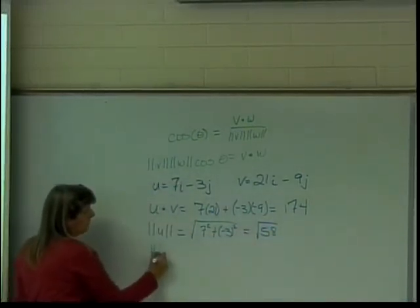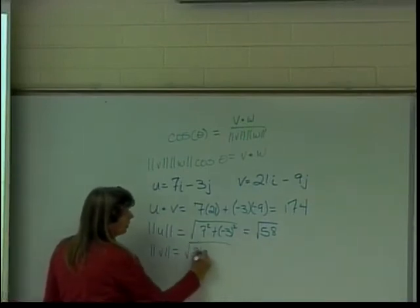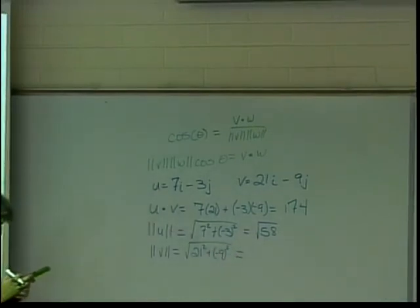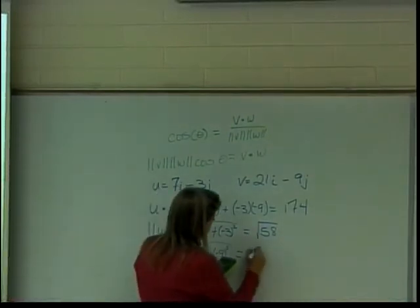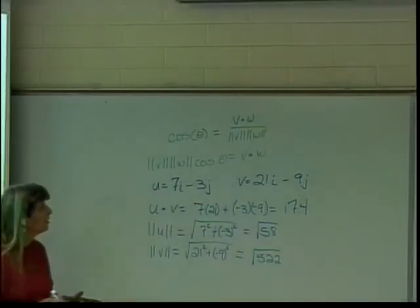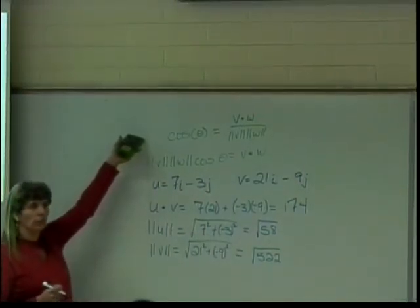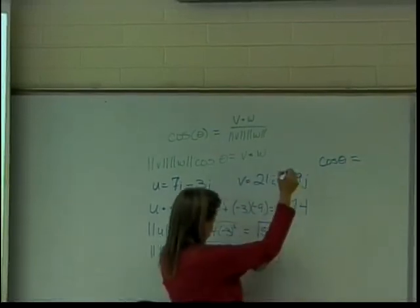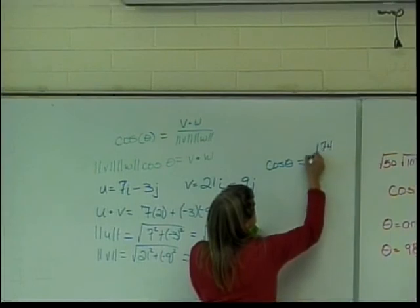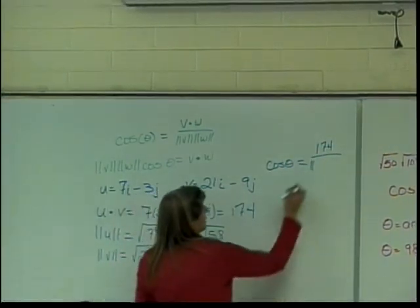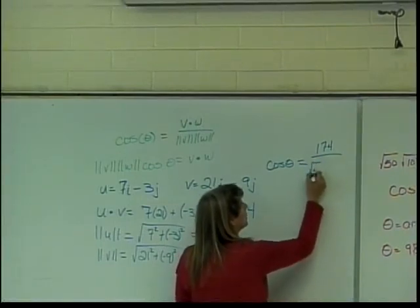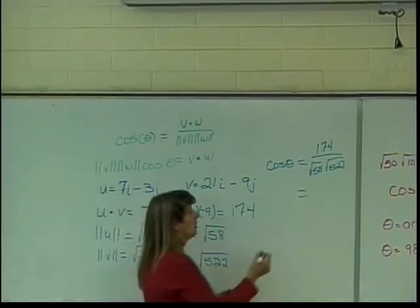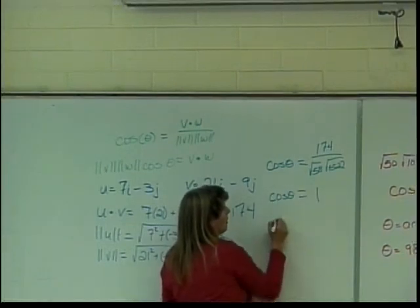and the magnitude of V is the square root of twenty-one squared plus negative nine squared which is the square root of five hundred twenty-two. So I'm okay if you remember this formula for doing it and don't go through the rest of the process. So the cosine of theta is equal to one hundred seventy-four over the square root of fifty-eight times the square root of five hundred twenty-two. When I calculate that what do I get? One. So the cosine of theta equals one that means they are parallel.